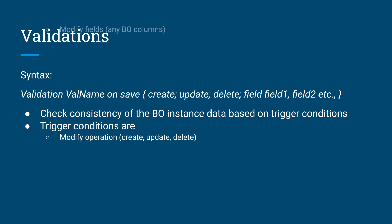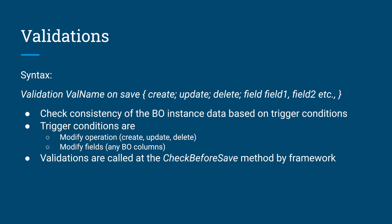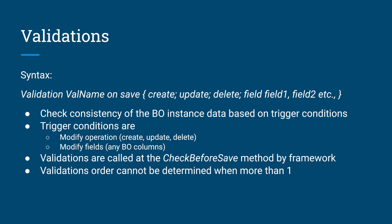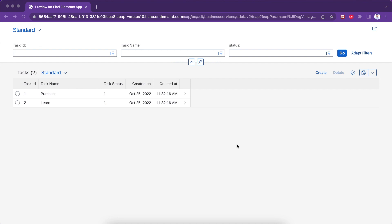Validations get triggered based on two things: one is modify operations — that is create, update, or delete — and the second is modify fields, where you can mention any PO columns. The framework will call the validations at the 'check before save' method, which is a generic method at the save sequence phase. If a behavior definition has three validations, you cannot decide which executes first — they are randomly triggered by the framework. The most important thing is we cannot use EML modify statements inside validations.